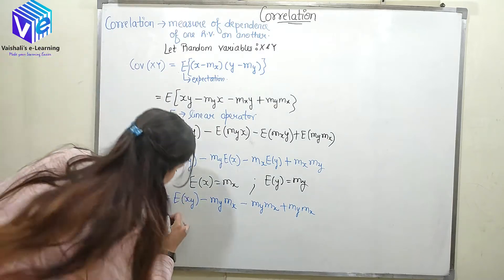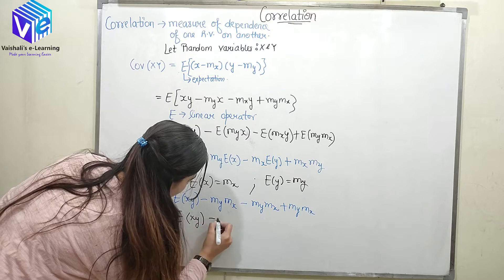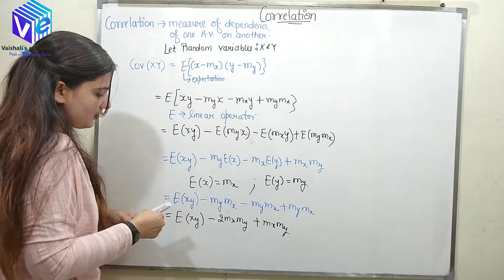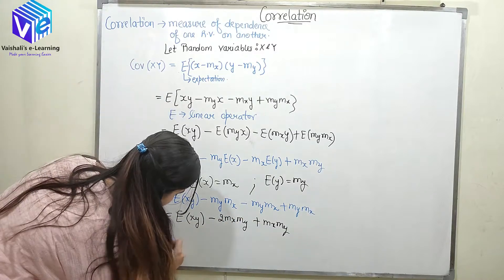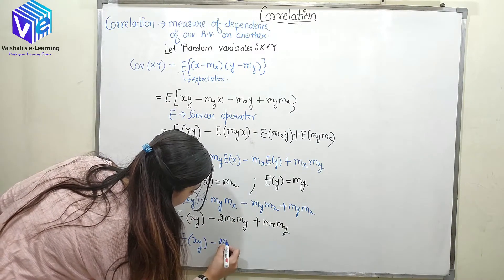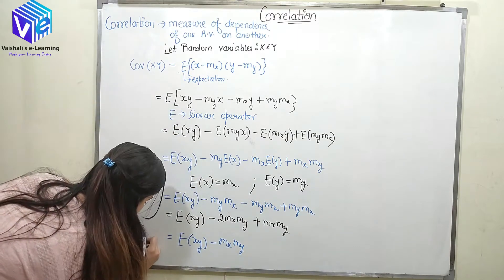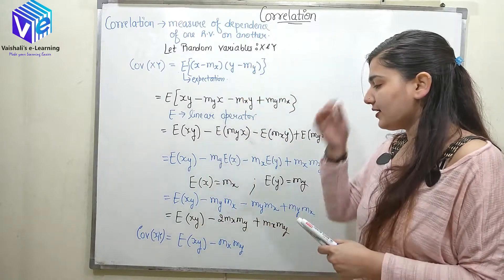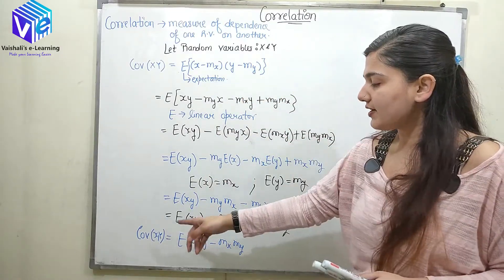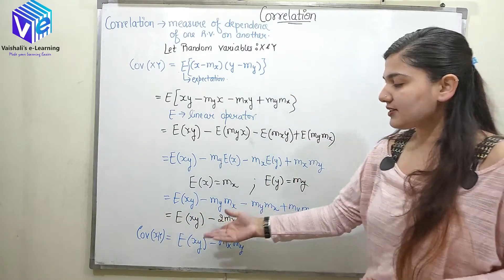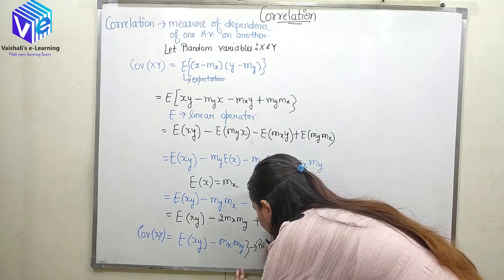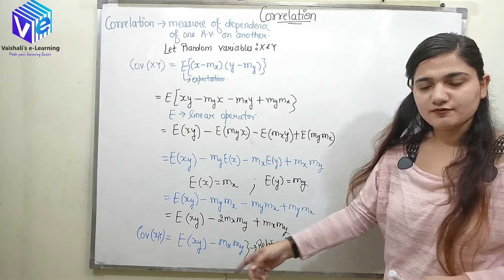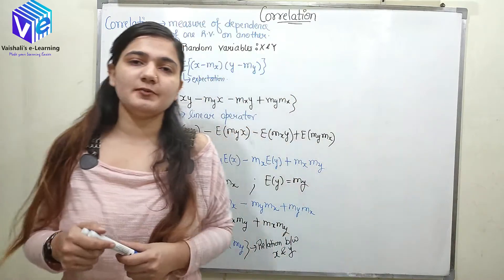Simplifying, these last terms combine so that the covariance of x and y equals E[xy] minus m_x·m_y. I hope you are clear on how to find the covariance, which gives the dependence of random variable x on random variable y and the relation between them.